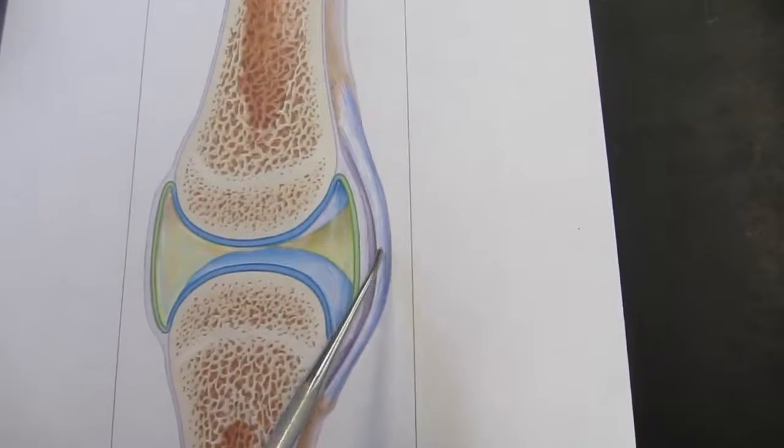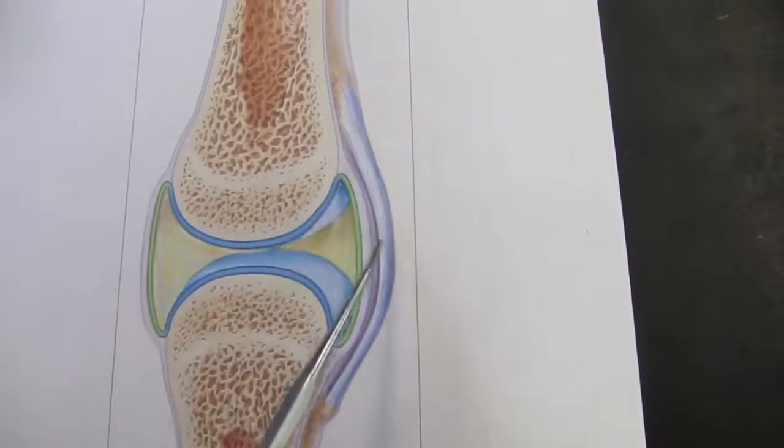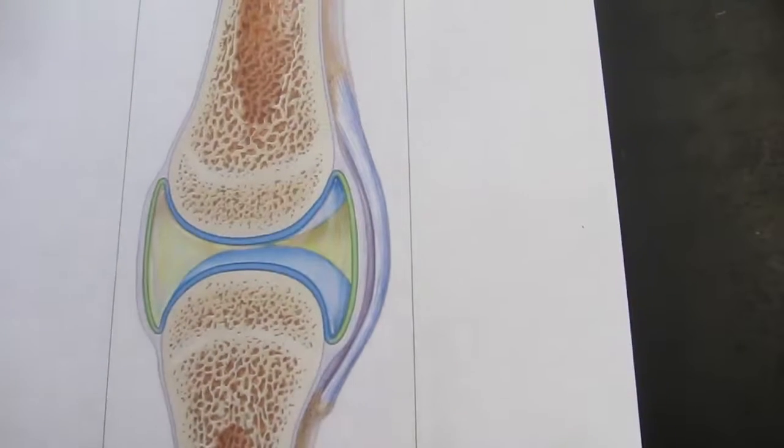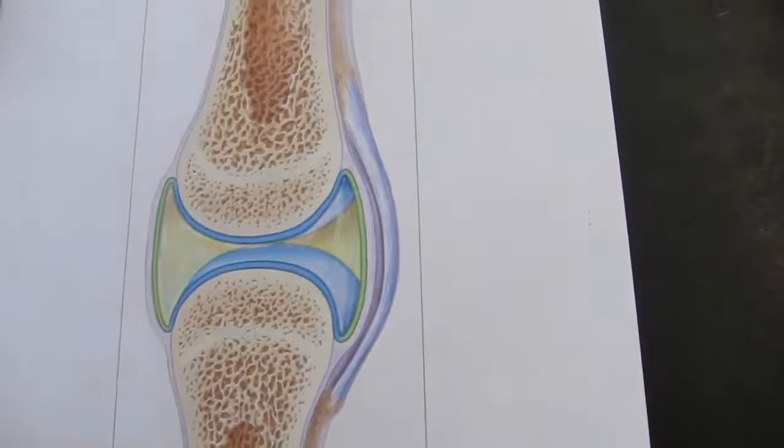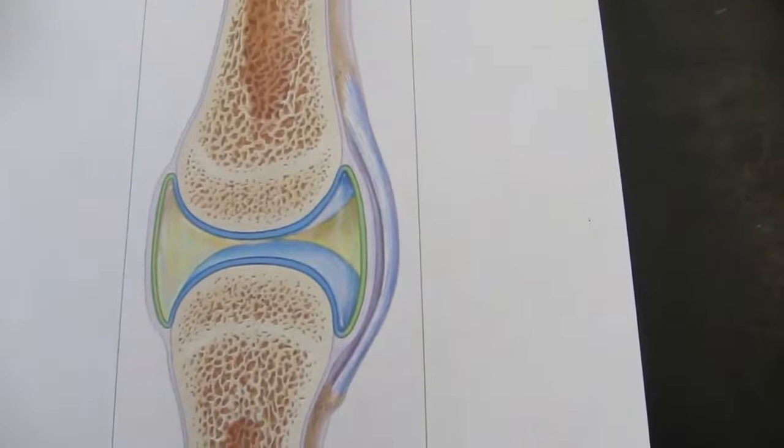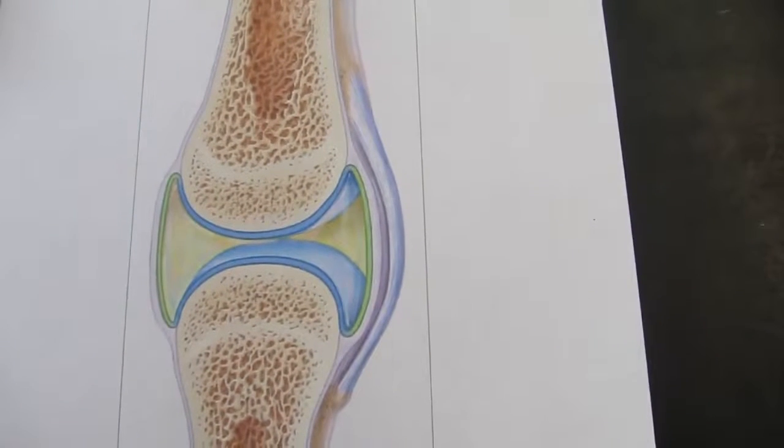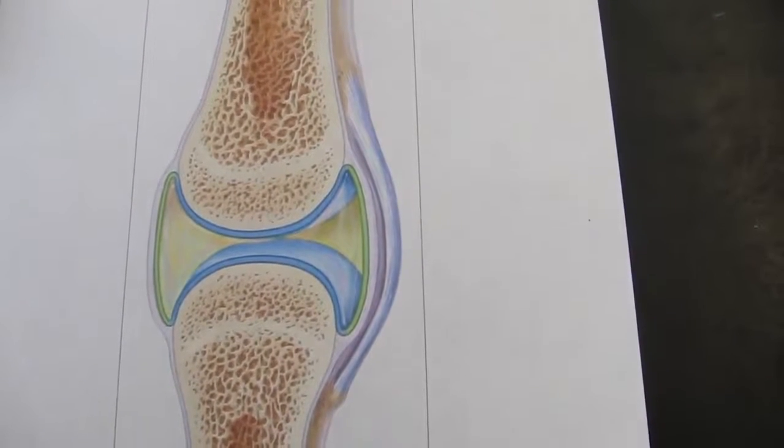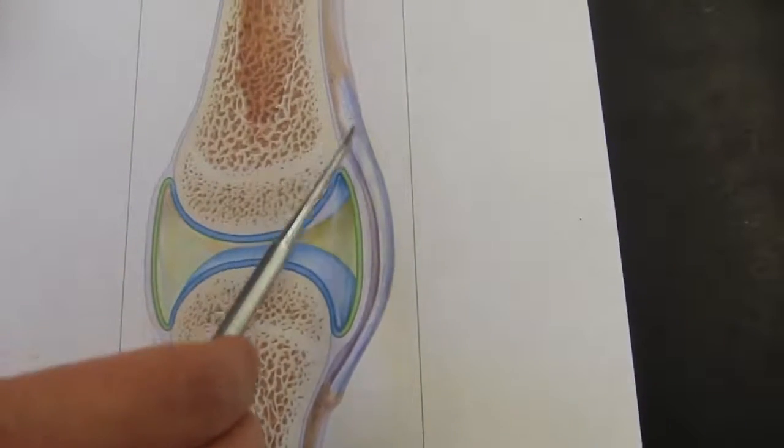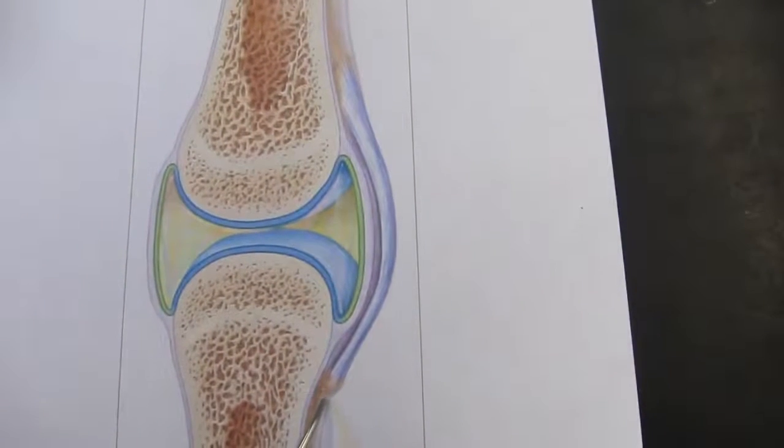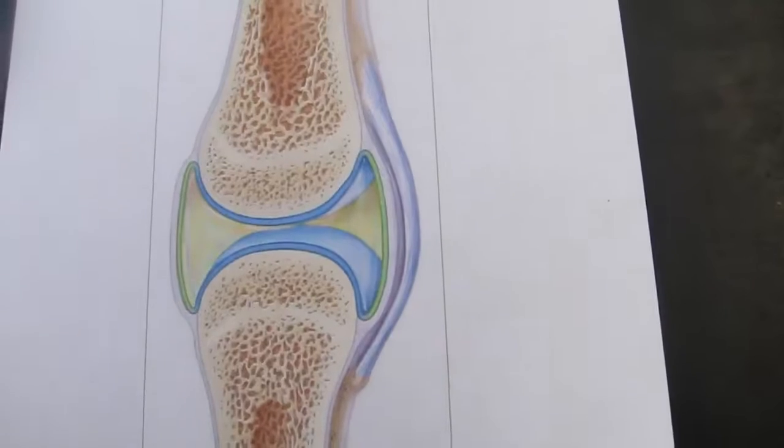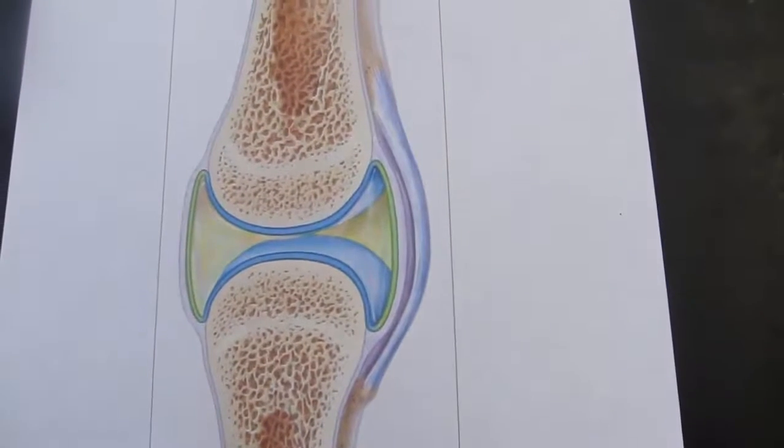Then, as we go out to our most superficial layer, you can see this kind of whitish structure. This is a ligament. Most synovial joints will have ligaments associated with them, and the ligaments are there to reinforce the joint. So the number and position of ligaments will be important to determining the stability of the joint.